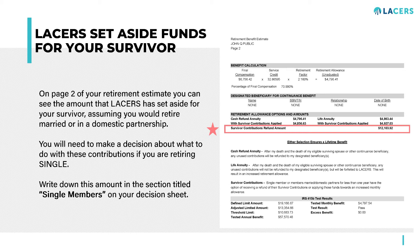On page two, under the retirement allowance options and amounts section, the line labeled survivor contributions refund amount will show you the amount that you have. This is the money that you'll be making a decision about.